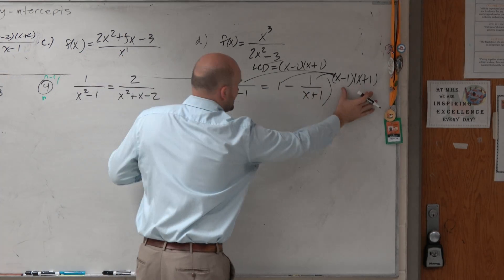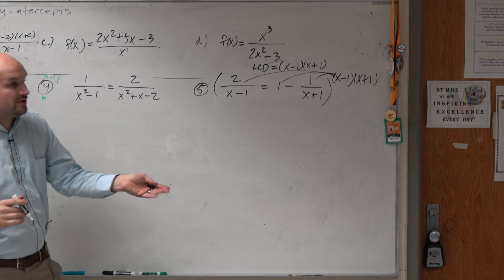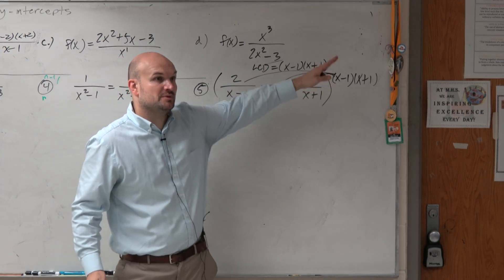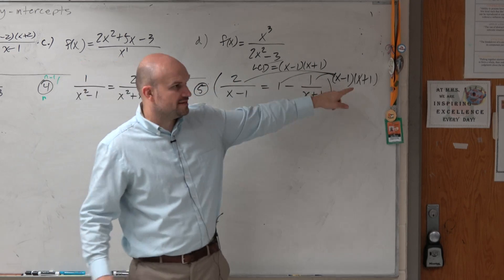So when I multiply this times that, I can see that my x minus 1's will divide out, right? Because that's in the denominator, that's in the numerator. They're exactly the same, so they divide out. So therefore, I'm just left with 2 times x plus 1.